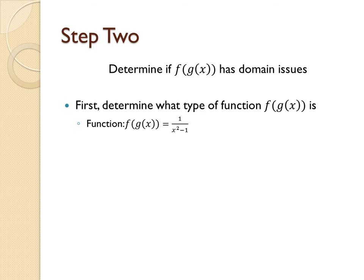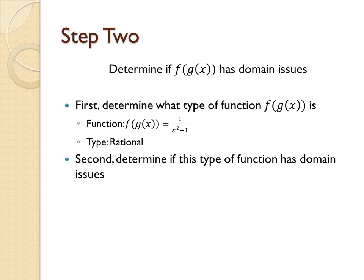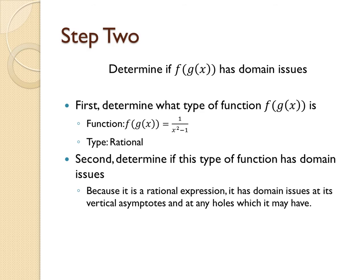Next, we need to determine if this function has domain issues. Because it is a rational function, it does have domain issues. Specifically, it has domain issues at its vertical asymptotes and at any holes which it may have.